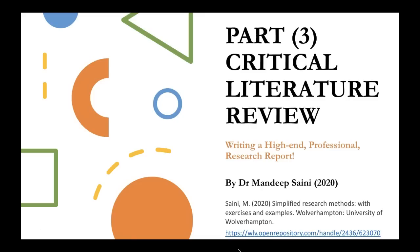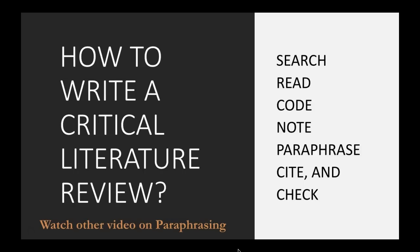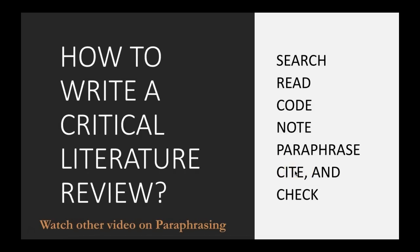For a critical literature review, you always search for articles, documents, or reviews based on the title or your subject area. Then you read the documents. After reading, you code the documents — whichever paragraph or sentence is relevant to your argument, you highlight it and make a note. After noting, you paraphrase, and then you cite the argument with the author's name and year of publication.